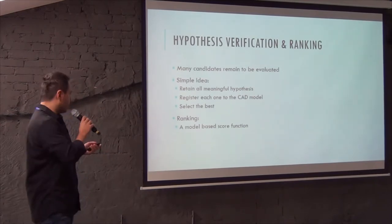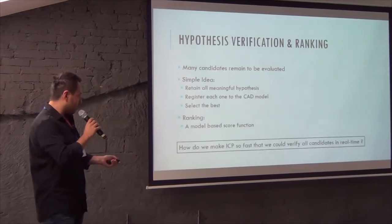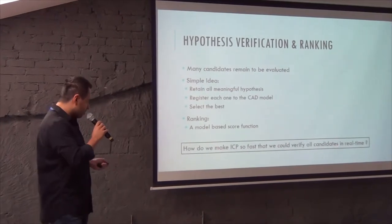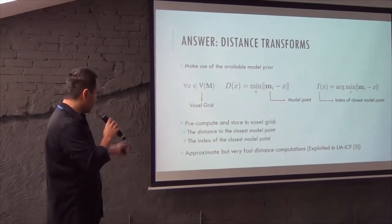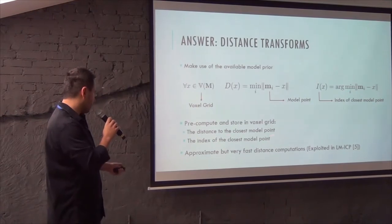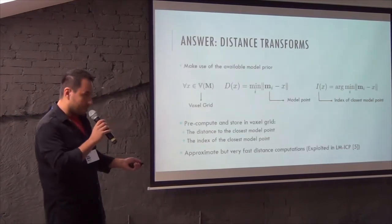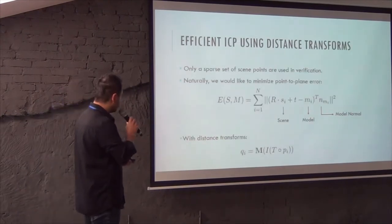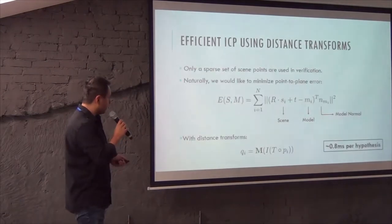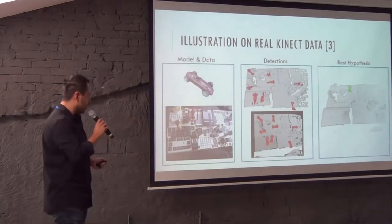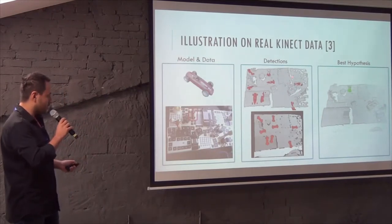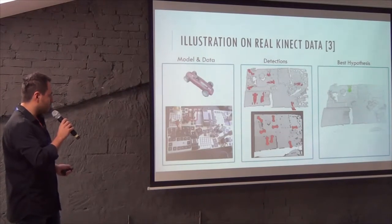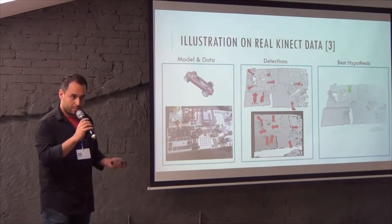The verification is simple. We store the distance transform of the model because we have the prior at hand. Every scene which is detected gets registered back onto the distance transform, and therefore the correspondence search takes all at once. This gives a nice property that each verification takes about 0.8 milliseconds per registration. On a Kinect image, for example, you have all these hypotheses from the pose parameterizations. You do the registration to the model frame and come up with the best detection.